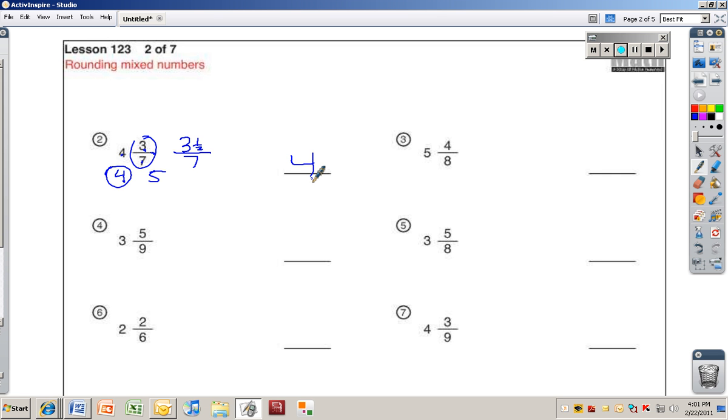Is this starting to make sense? Mm-hmm. Okay, number 3, 5 and 4 eighths. Well, look at that. 4 eighths is exactly what? 1 half. So remember, when it's a half or more, you're going to round it up. So what's 5 and a half or 5 and 4 eighths going to round to? 6. 6. I round that one to 6.